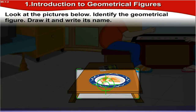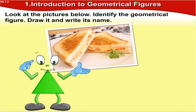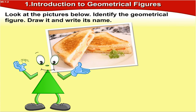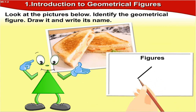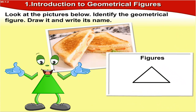This is a picture of a yummy sandwich. Can you identify the shape of the sandwich? Yes, it's a triangle. So you'll draw a triangle over here and the name of the figure is triangle.